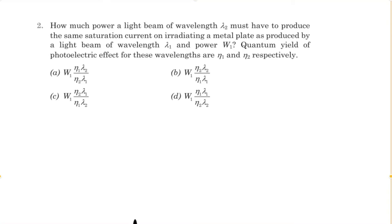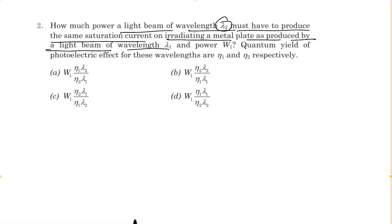Hello everyone, after a long time I am again here to solve a beautiful question. This is not only a problem-solving video but I will also interpret the important concepts related to this question. The question asks: how much power of a light beam of wavelength λ2 must it have to produce the same saturation current as produced by a light beam of wavelength λ1 and power W1? The quantum yield for these wavelengths are η1 and η2 respectively.